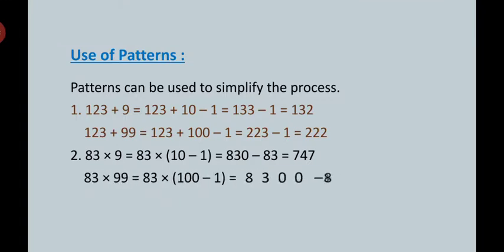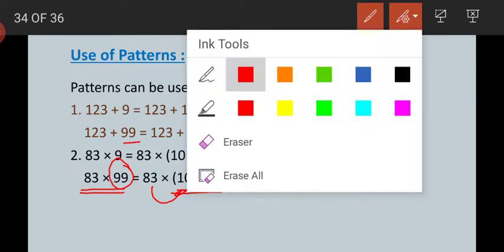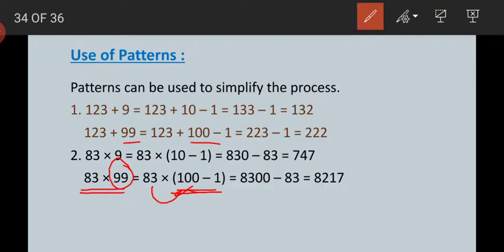Now, if you have a question like 83 multiplied by 99, write 99 as 100 minus 1. Apply the same rule: first step is 83 multiplied by 100, second step is 83 multiplied by 1.